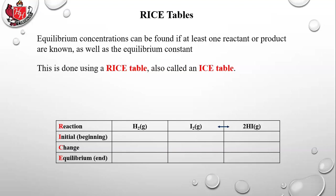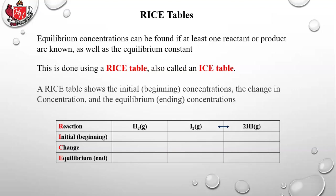RICE stands for Reaction, the Initial concentration, the Change in concentration, and then the Equilibrium concentration. A RICE table shows the initial beginning concentrations, the change in concentration, and the equilibrium ending concentrations.